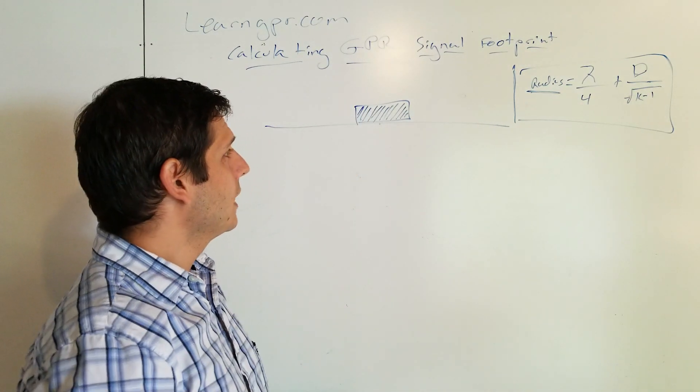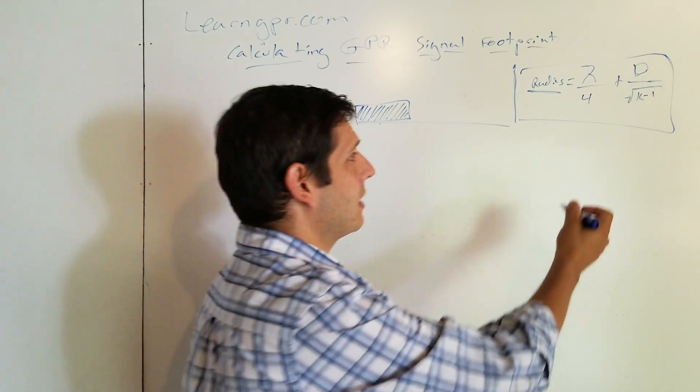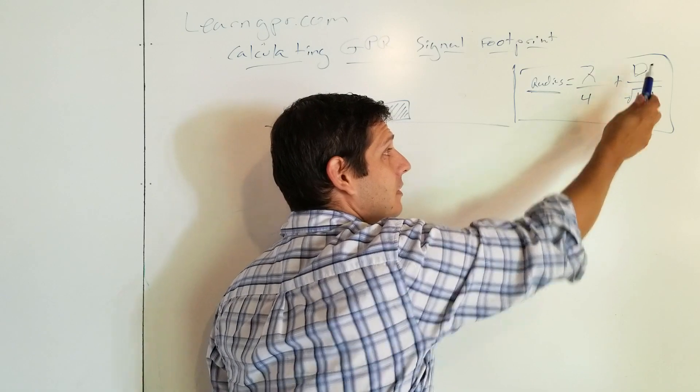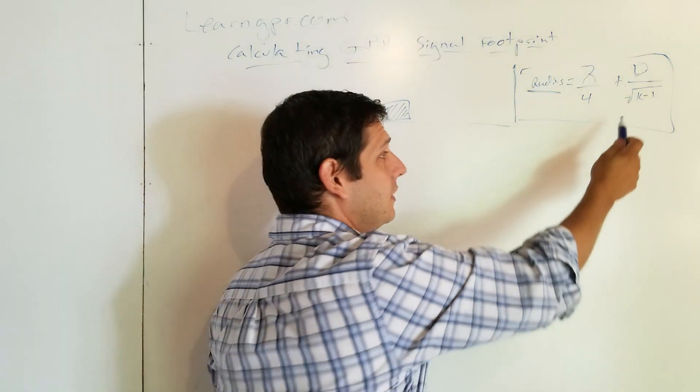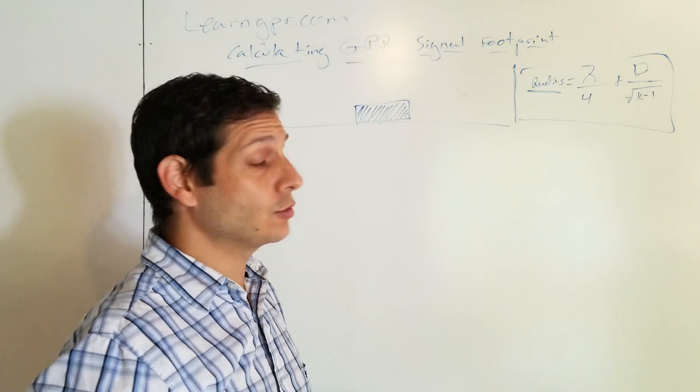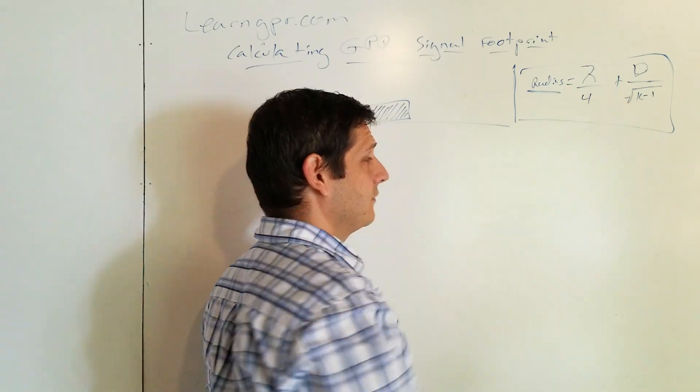Here's the equation that Anon and Cosway came up with in order to estimate footprint radius. And here's what you got is you have to know the wavelength. You have to know the depth and you have to know the RDP, the relative dielectric permittivity. Those are the three things you need to know, wavelength, depth, and permittivity.